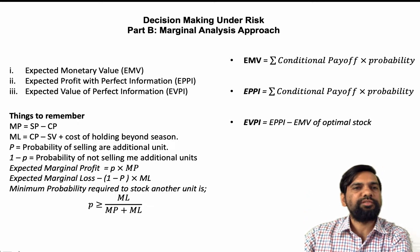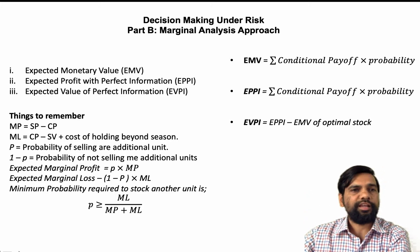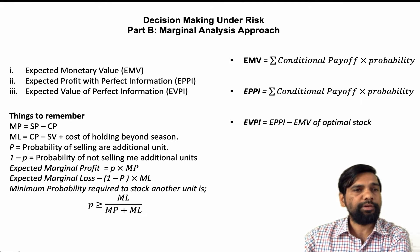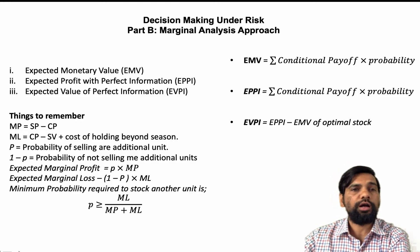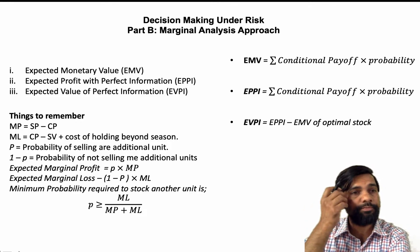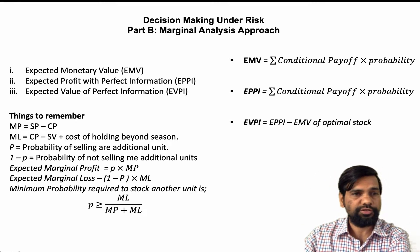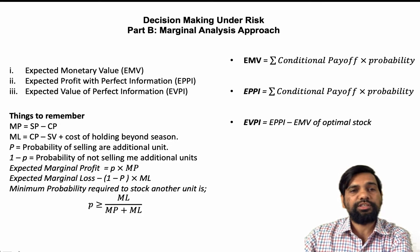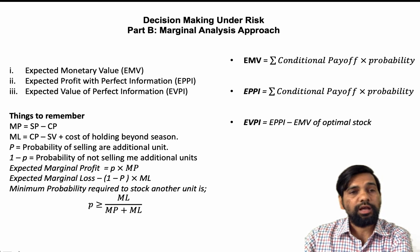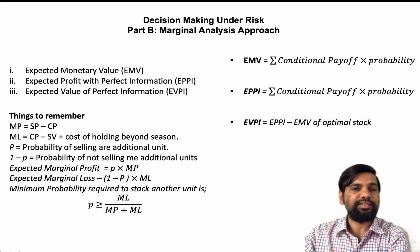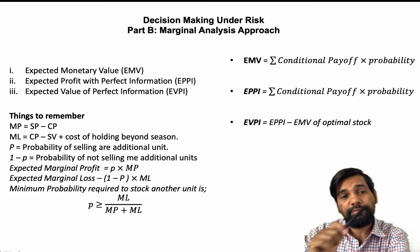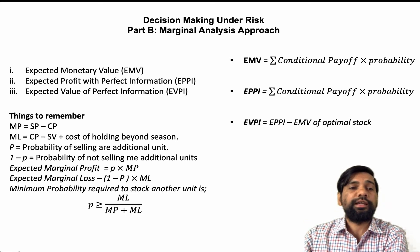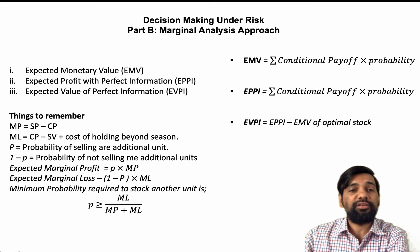Hello friends. In the case of decision making under risk, expected monetary value (EMV), expected profit under perfect information (EPPI), and expected value of perfect information (EVPI) — these tools are frequently used. These things are calculated in two ways: one is the general method, a simple calculation method, and the second one is the marginal analysis approach. We already have one video on general methods. This video covers the marginal analysis approach.